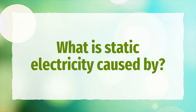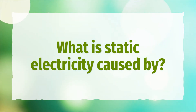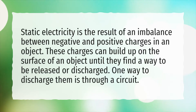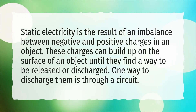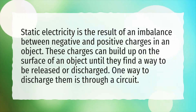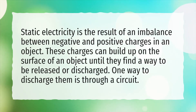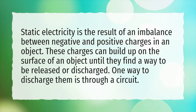What is static electricity caused by? Static electricity is the result of an imbalance between negative and positive charges in an object. These charges can build up on the surface of an object until they find a way to be released or discharged. One way to discharge them is through a circuit.